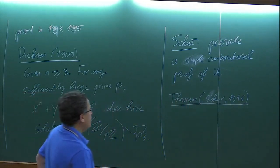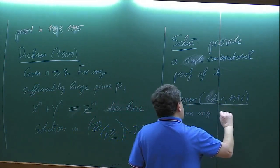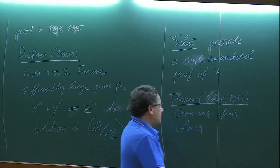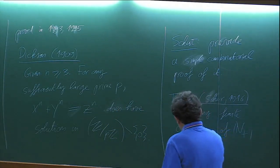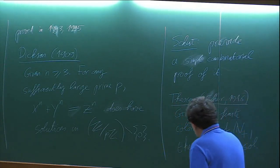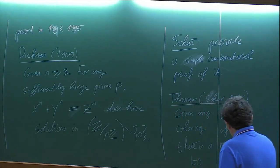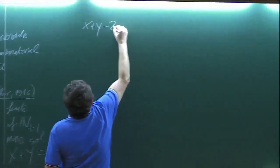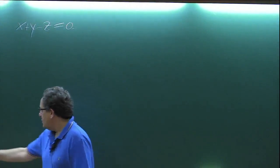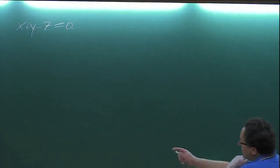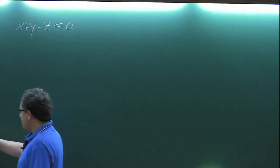Schur's theorem: given any finite coloring of the positive integers, there must be a monochromatic solution to the equation x + y = z, or equivalently x + y - z = 0. There is no exponent n here, but there is this combinatorial statement. Schur proves that statement and deduces Dixon's theorem. One of the purposes today is to prove this theorem.